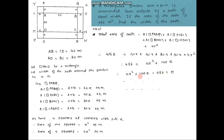Before solving, we divide the entire equation by 4. We get: x² + 35x − 114 = 0.